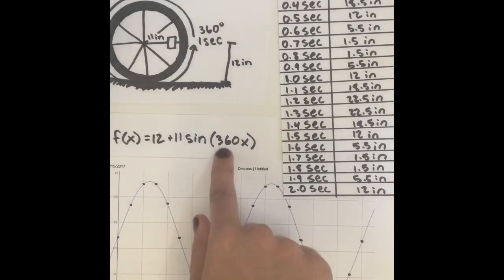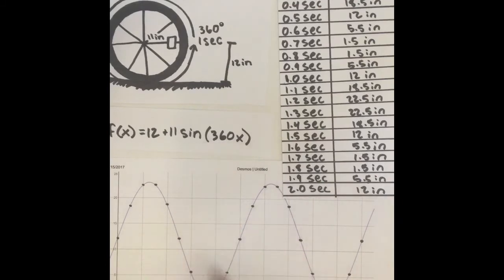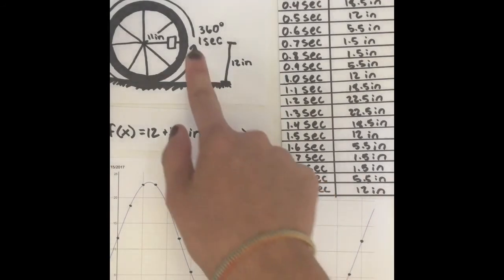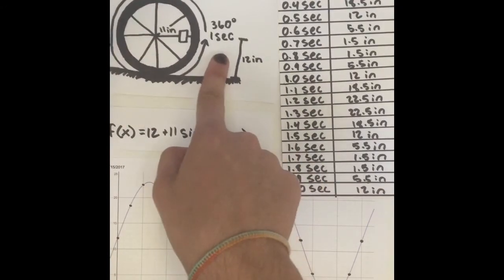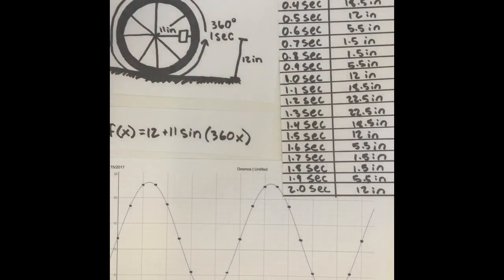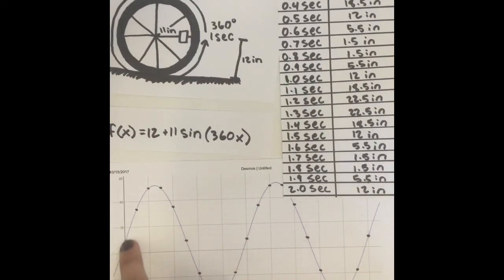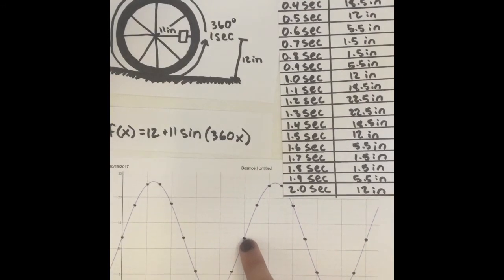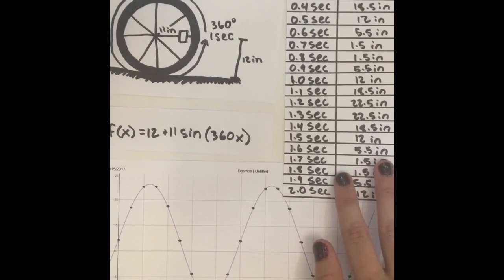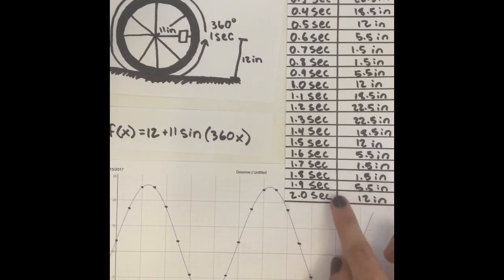And the 360 comes from the period, which is how many degrees the wheel spins in one second. And so because it takes one second for the whole wheel to spin, which is 360 degrees, the period is 360. And that's also on our graph how long it takes for it to go up and down and reach the midline again. So if it starts at the midline and finishes at the midline, that is one period. So this graph shows two periods or two seconds, just like our data table.